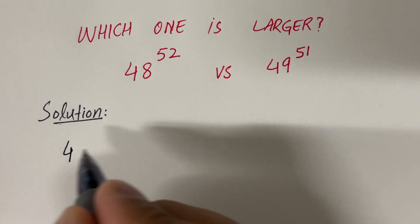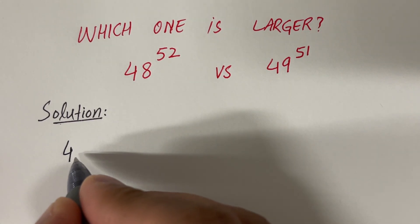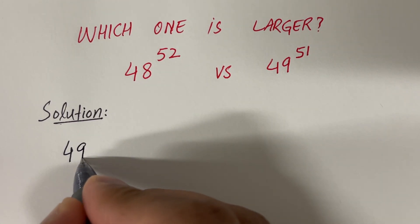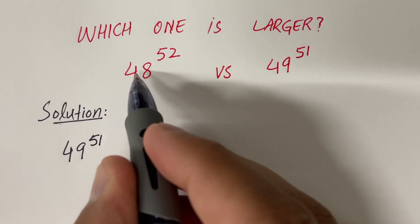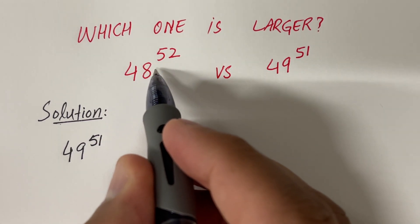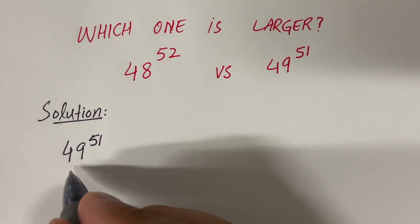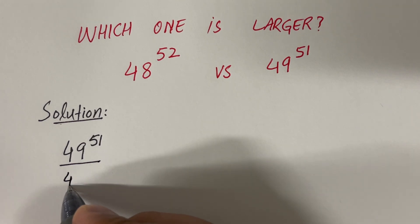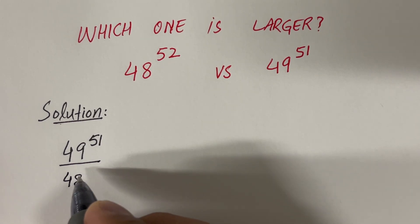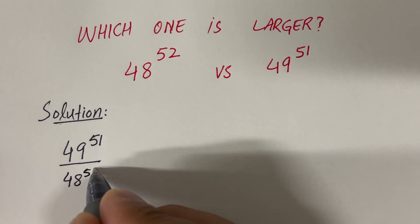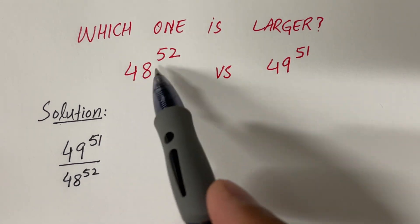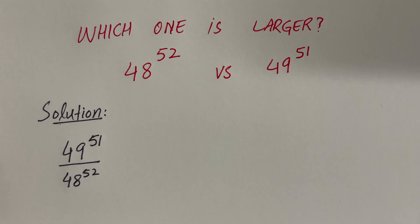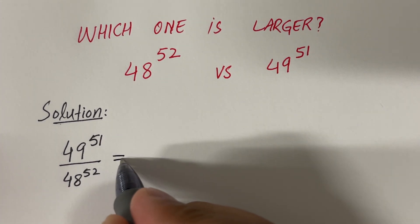So we have 49 raised to the power 51 and another number is 48 raised to the power 52. Let's look at the ratio between these two numbers — 49^51 in the numerator and 48^52 in the denominator.